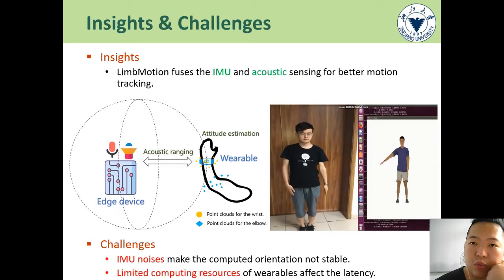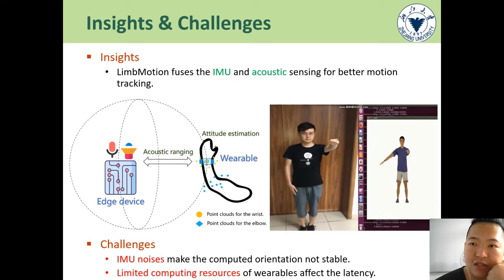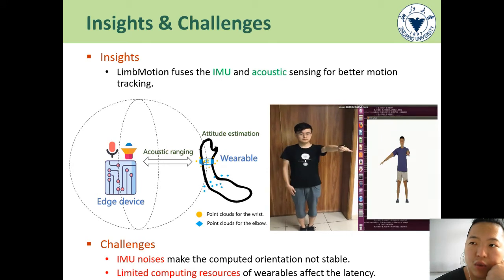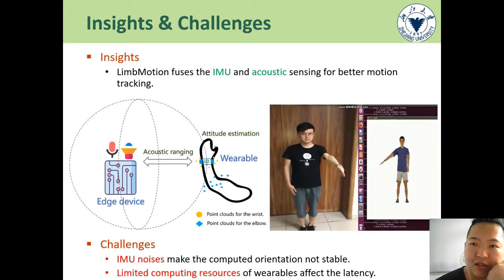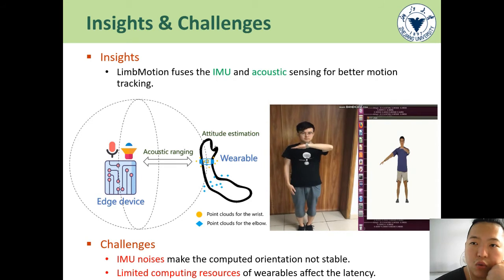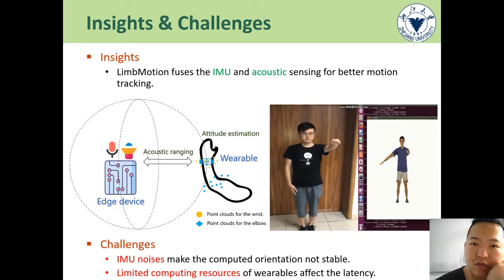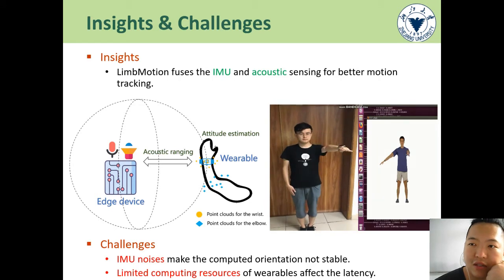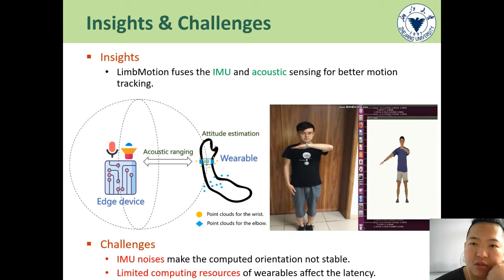In LimbMotion, we propose an IMU-acoustic sensing fusion method. Using the IMU data, we get the possible limb postures through analyzing the limb's range of motion, which is stored in the form of point clouds. On the other hand, we use the nearby edge device as an anchor to help motion tracking. The motion collects the distance between the wearable and the edge device, which reduces the search space since the wrist location is located on a certain spherical surface.